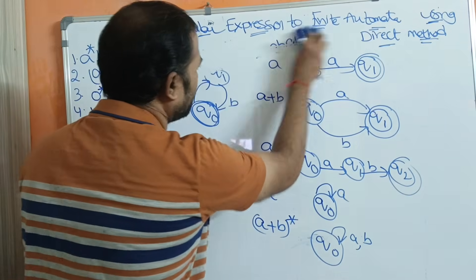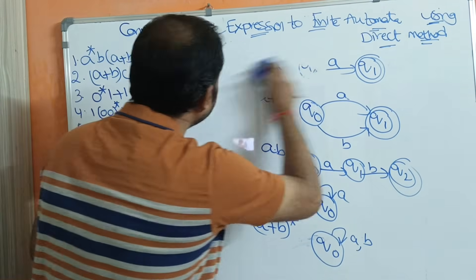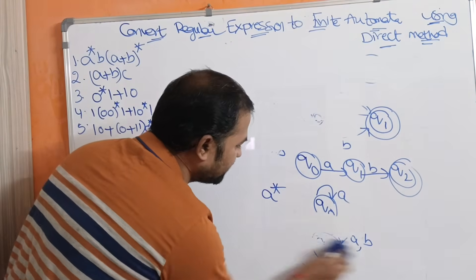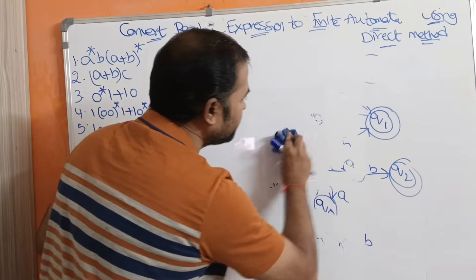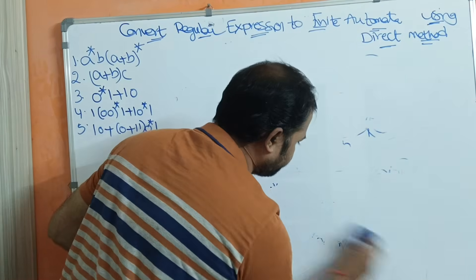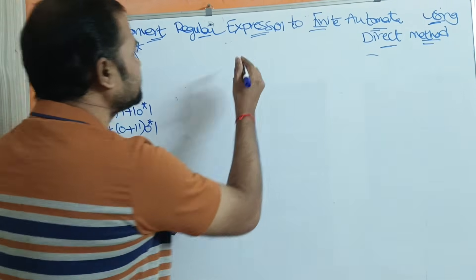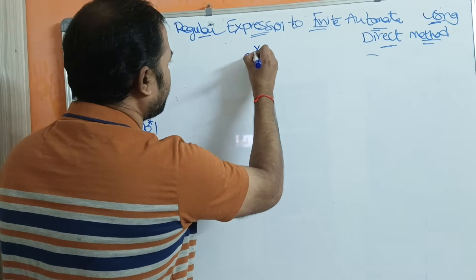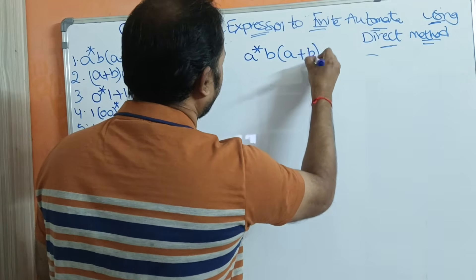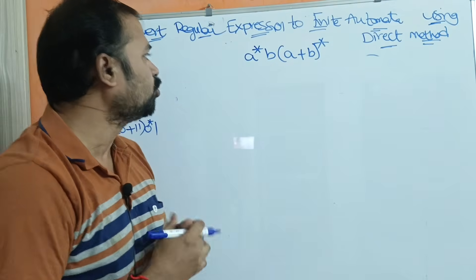Now with the help of this knowledge, we need to convert five regular expressions into finite automata using the direct method. Let us see the first example: A star B into (A plus B) whole star.